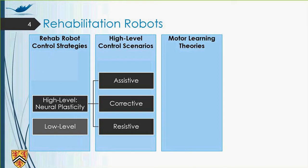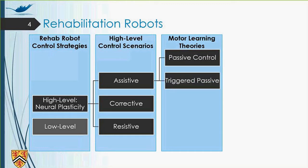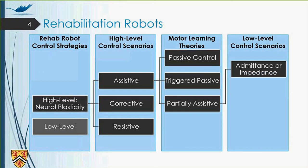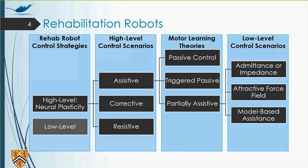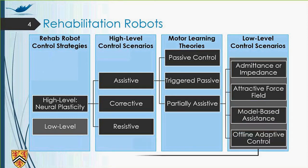There are various motor learning theories to implement assistance in the rehabilitation robots, like passive control, triggered passive, and finally, partially assistive. Among these motor learning theories, partially assistive mode, which is partial assistance during rehabilitation, is used successfully in most rehabilitation robots. But to implement this motor learning theory, there should be some low-level controllers that are admittance or impedance control, attractive force field control, model-based assistance control, and finally, offline adaptive control. So these controllers can implement partially assistive controls.